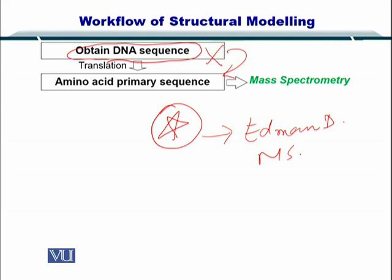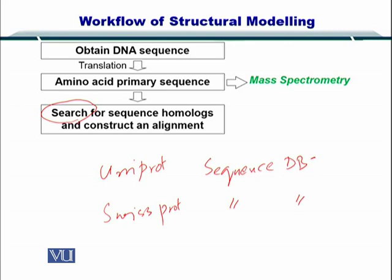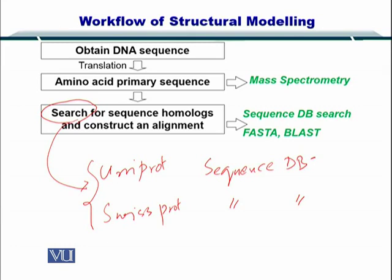So in case you don't know the DNA sequence, you can always go after mass spec. Now since you have the sequence for your protein, you can search for other proteins in the databases such as UniProt. UniProt is a sequence database, or SwissProt, which is also a sequence database. You can search for your protein within these databases to find other proteins that should have a similar sequence. After you search the sequence databases, you need to perform a BLAST, a sequence BLAST. The BLAST algorithm will give you the best or the closest sequences from the database when compared with your protein.